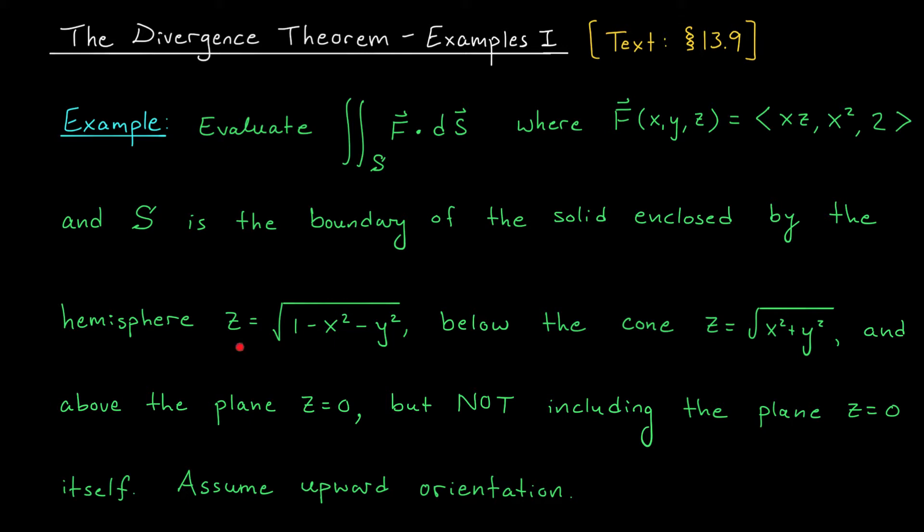We're given a hemisphere z equals root 1 minus x² minus y². If we square both sides of this and rearrange, we can write it as x² plus y² plus z² equals 1. So this is part of the unit sphere, but since z is a square root, it's non-negative. This is just the top half of the sphere.